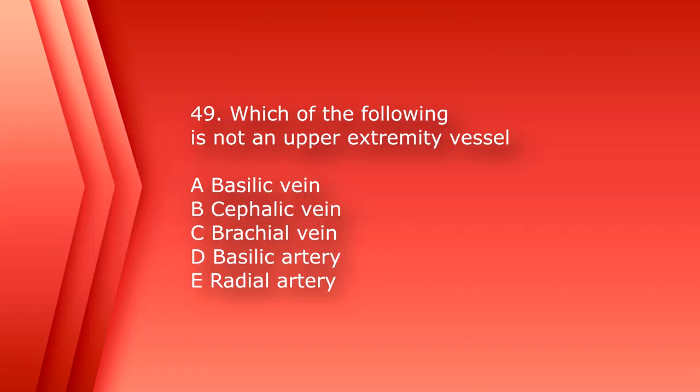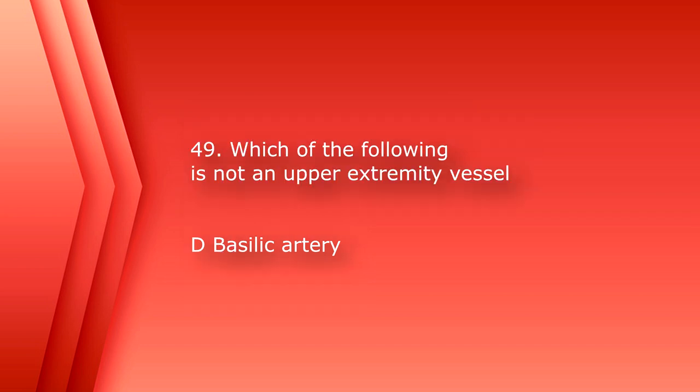Number 49: which of the following is not an upper extremity vessel? A. Basilic vein, B. Cephalic vein, C. Brachial vein, D. Basilic artery, or E. Radial artery. The answer is D, basilic artery — there is only a basilic vein.